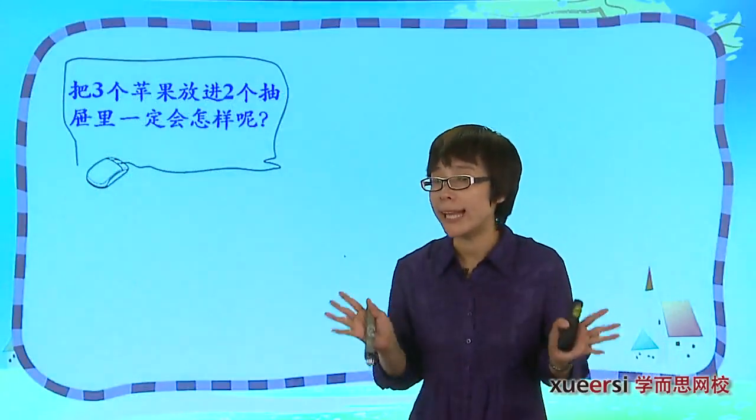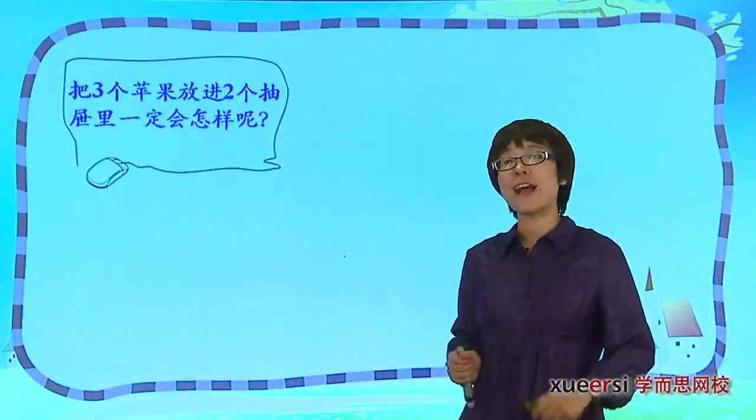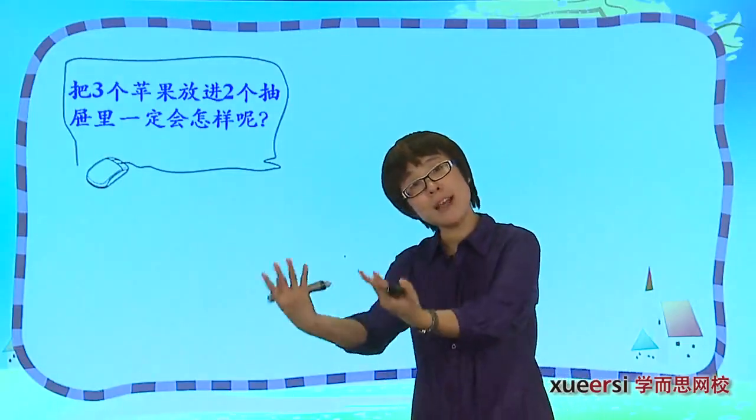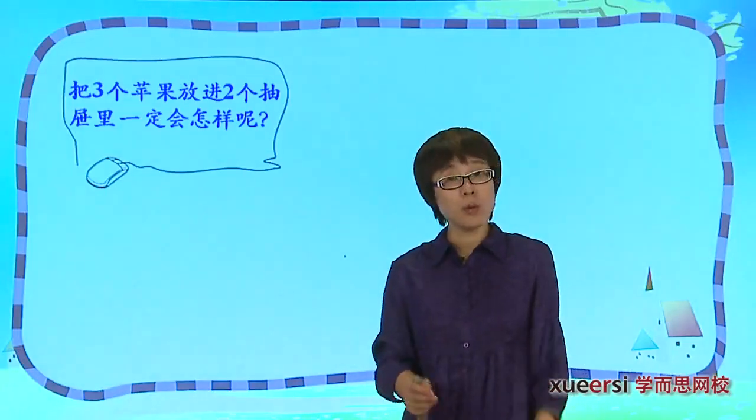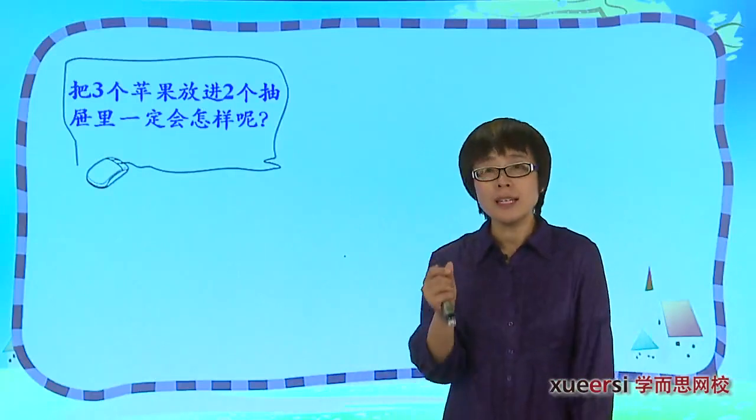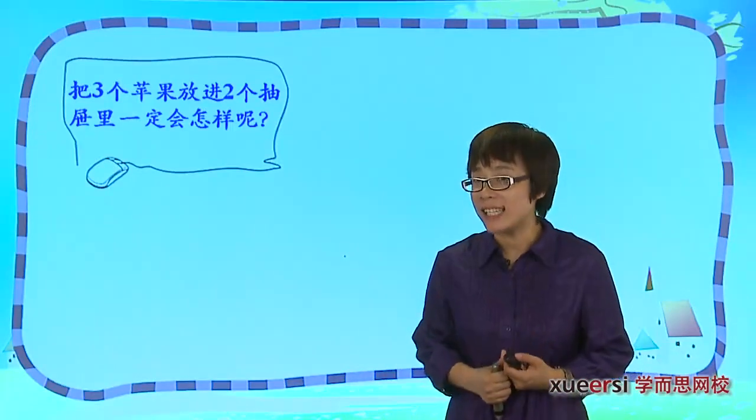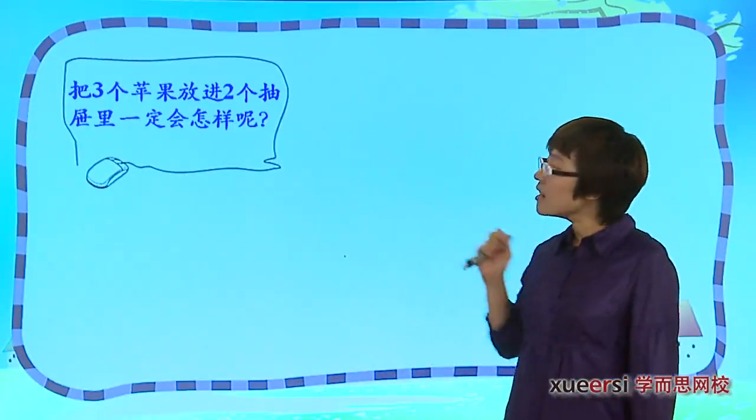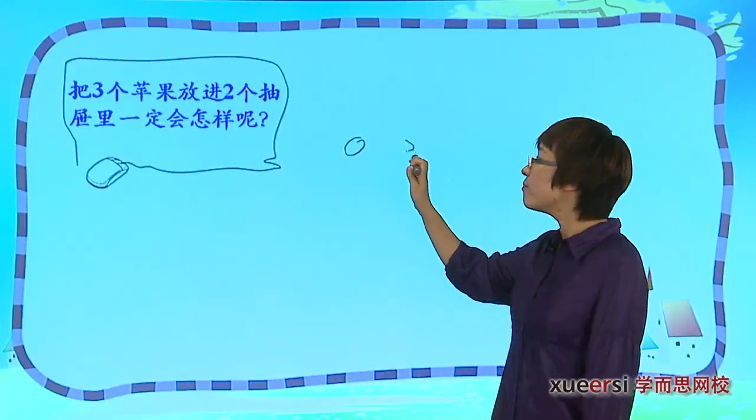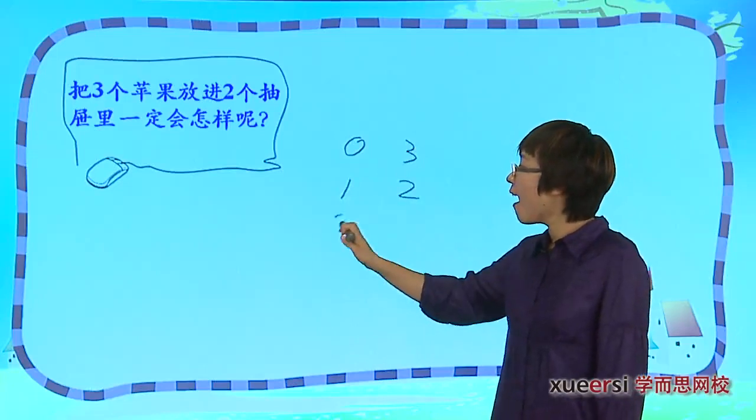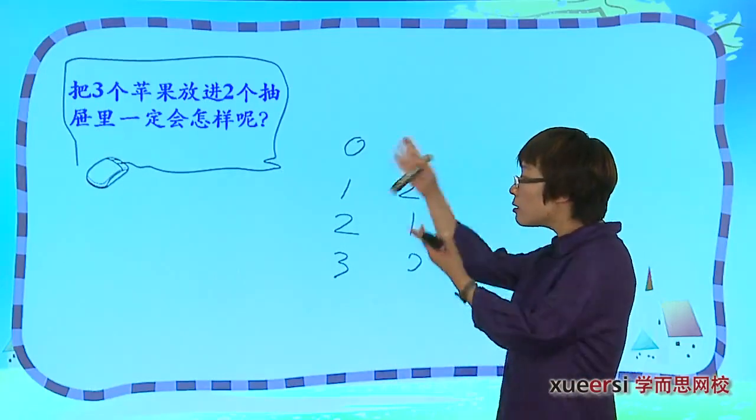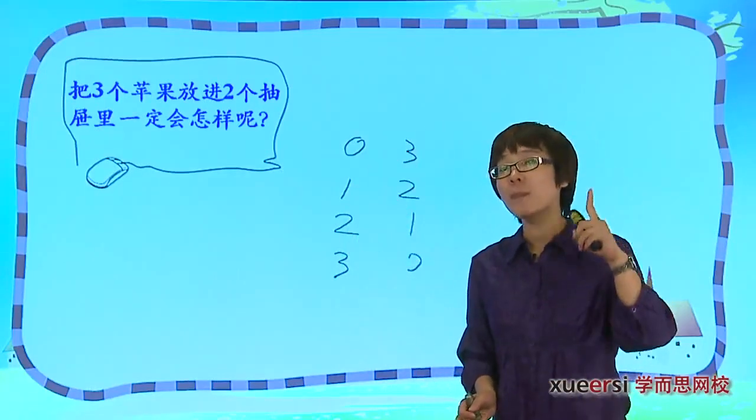把三个苹果放到两个抽屉里会怎么样呢？苹果C要不然跟A在一块，要不然跟B在一块，也说不定三个苹果非常团结有爱进到一个抽屉里。同学们想一想，三个苹果两个抽屉可能会出现什么情况？要不然就是0,3或者是1,2、2,1、3,0，是不是只有这四种情况？那么这四种情况当中，我们就盯那个装苹果最多的抽屉。